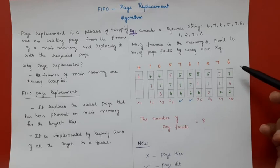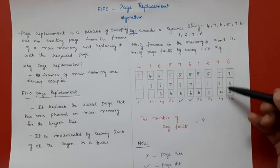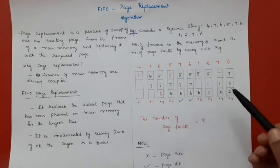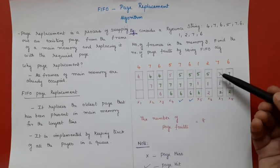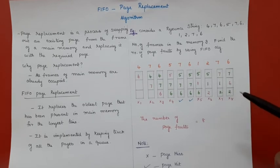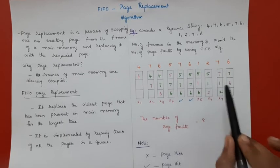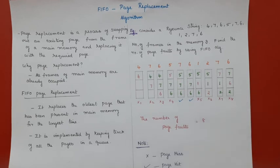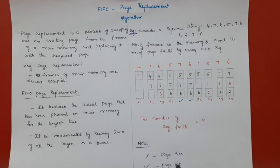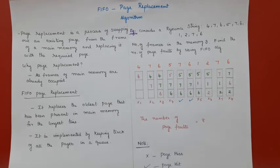The next page is 6 — 6 is not in memory. Comparing 7, 1, and 2, page 1 is the oldest, so I replace 1 with 6. This is also a page fault. The total number of page faults is 8. The cross mark represents a page miss or page fault, and the tick mark represents a page hit. This is how the FIFO page replacement algorithm works.